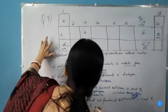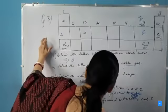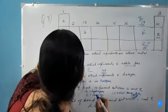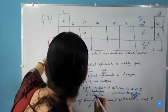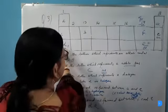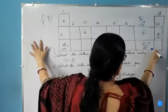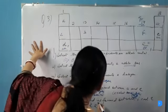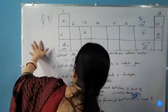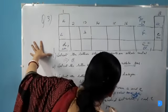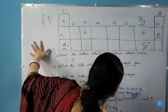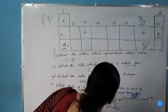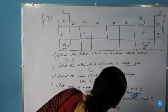The formula of the compound will be DE, because the alkali metal group (Group 1) has valency one and the halogen group also has valency one. So the formula will be DE — that is sodium chloride — and the bond will be an ionic bond.